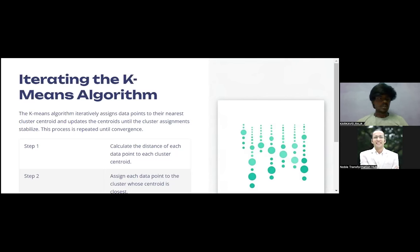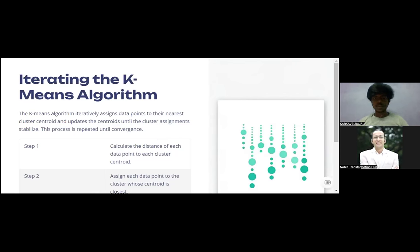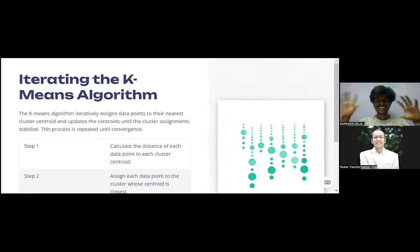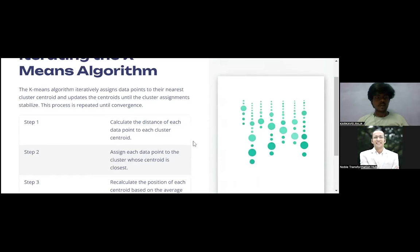The k-means algorithm iteratively assigns data points to their nearest cluster centroid and updates the centroid until the cluster assignment is stable. This process is repeated until convergence. Simply put, we have data points and we move them to clusters, keeping iterating until we achieve convergence — that is, until the clusters become very separate and stable.